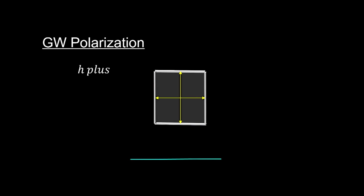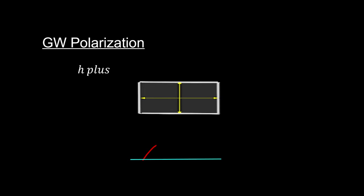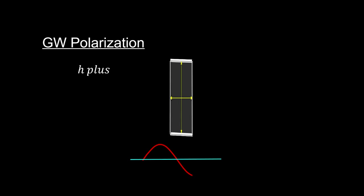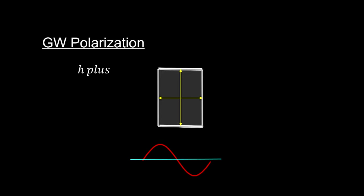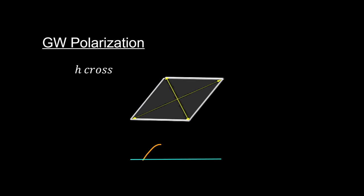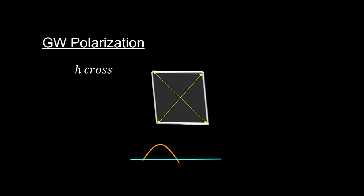Here's an exaggerated look at what an oscillating H-plus polarized gravitational wave does to a square plate it passes through. Again, the wave is passing into the page. For an H-cross polarized wave, the effect would be similar but shifted 45 degrees.